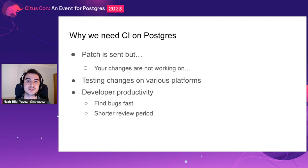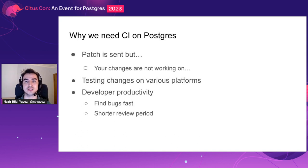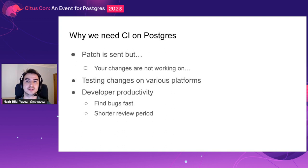Let's talk about why we need a new CI on Postgres. I believe you have heard the phrase: these changes are not working on this machine, but they were working on my local — at least once, right? That is quite the same for Postgres. If you are reading the Postgres mailing list, there is a high chance you can see something like: this patch or these changes are not working on my local or not working on that platform. So our aim was to create CI to test your changes on various platforms and to increase developer productivity. By using this CI, you will find bugs first, and the review period will be shorter.